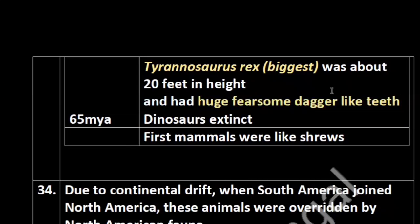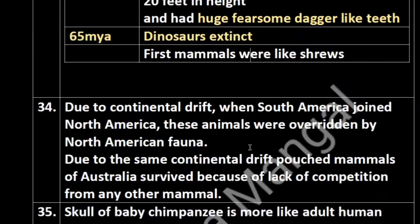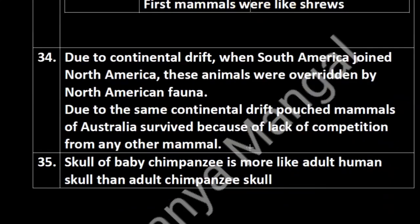Tyrannosaurus rex was the biggest dinosaur discovered — its characteristic feature was huge, fearsome, dagger-like teeth. Then 65 million years ago, dinosaurs went extinct — this is important. The first mammals were like shrews.